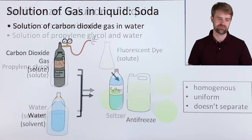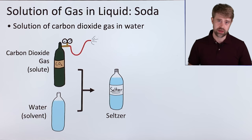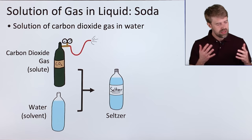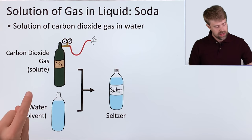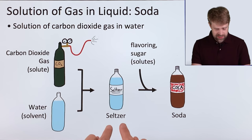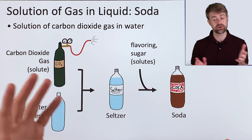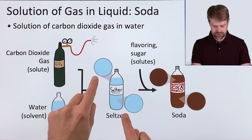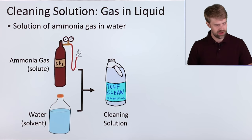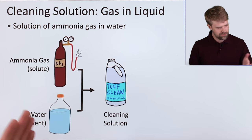Now, you can also make a solution by dissolving a gas into a liquid. If you dissolve carbon dioxide gas in water, you make seltzer. Here, the gas is the solute, and the liquid is the solvent. And, if you take that seltzer, and you add some flavoring and sugars, those are also solutes, but they're not gases. You get soda or pop. And in these bottles, as you can see, the mixtures are nice and uniform. Another example of a gas dissolved in liquid is ammonia cleaning solution. This is a solution of ammonia gas solute that's dissolved in water.